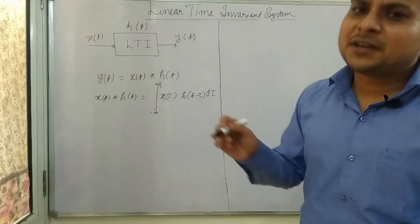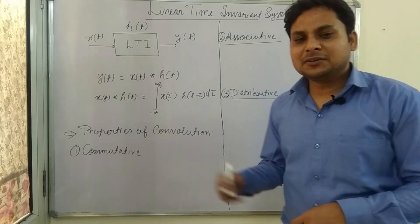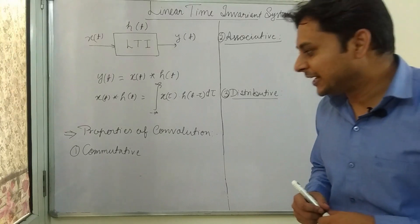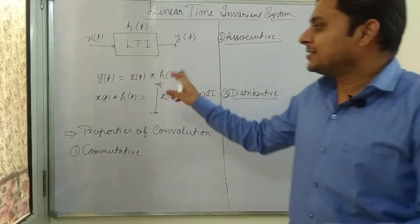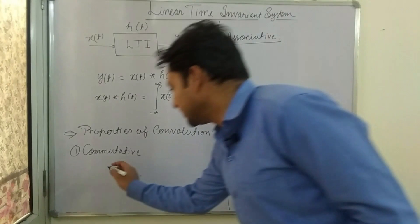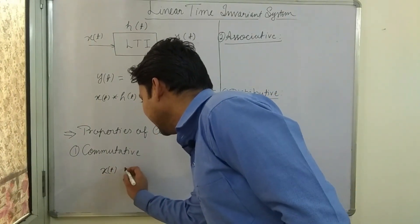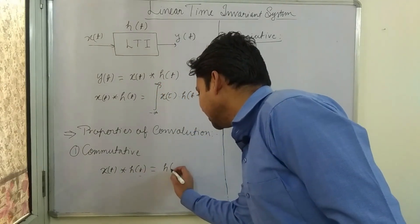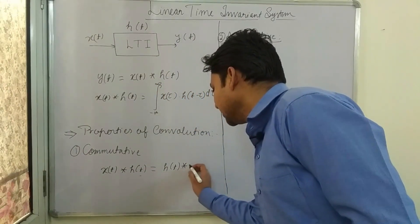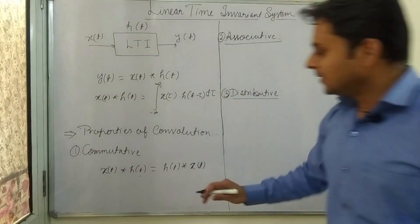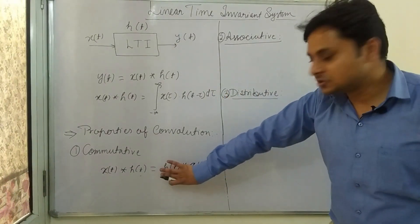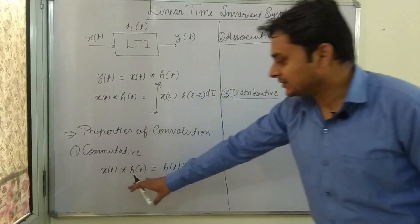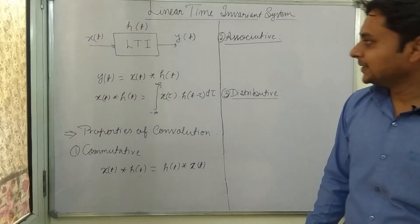Now we will focus on the properties of convolution. Convolution shows three properties. First is the commutative property. The commutative property means we can change the sequence of the two signals. x(t) convolved with h(t) can be written as h(t) convolved with x(t). The result of convolving h(t) with x(t) is the same as convolving x(t) with h(t).